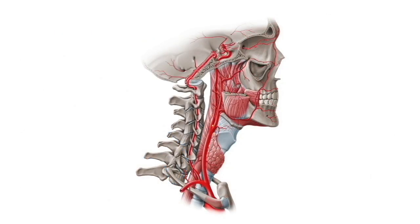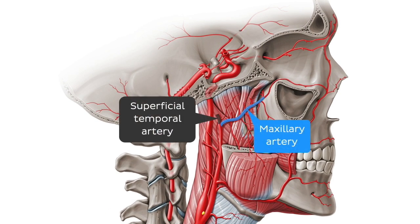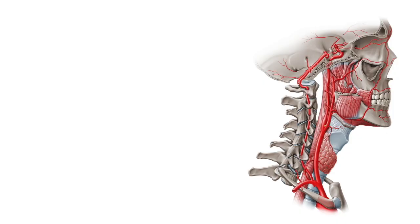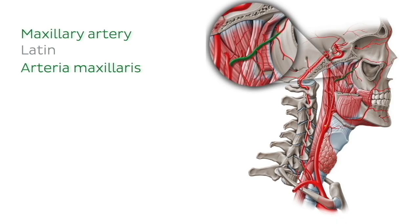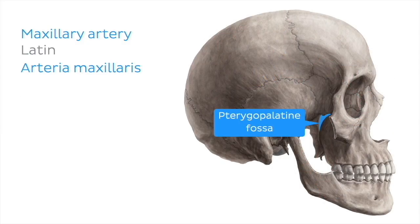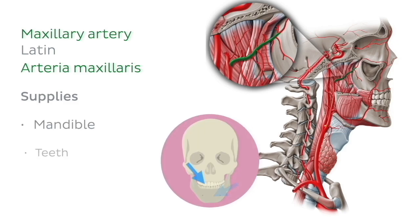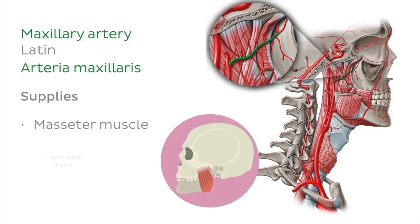We're on number seven of eight branches. The final two branches — the maxillary and superficial temporal arteries — are known as the terminal branches of the external carotid artery, as they are formed by its terminal bifurcation. The maxillary artery is the larger of the two terminal branches and has 17 branches itself. It enters and traverses the infratemporal fossa before terminating in the pterygopalatine fossa. Its branches supply many structures including the mandible, the teeth, the masseter muscle, and the buccinator muscle.